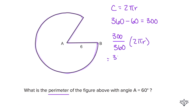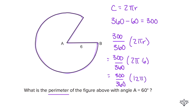So we multiply 300 over 360 times the circumference, which is 2πr. We have 2 times π times 6, which we can replace with 12π. So 300 over 360 — cancel the zeros to get 30 over 36, then divide top and bottom by 6 to get 5 over 6. So we have 5/6 times 12π.